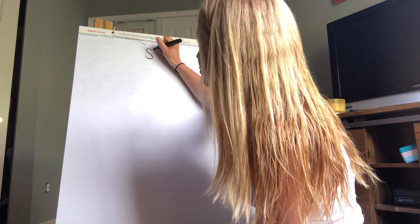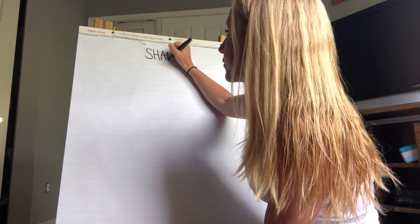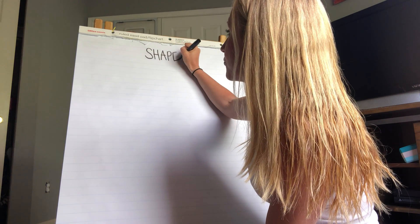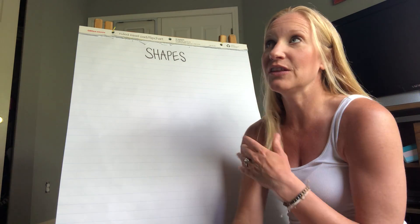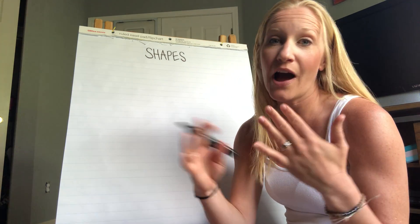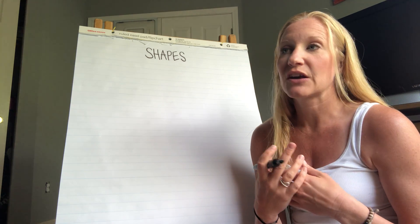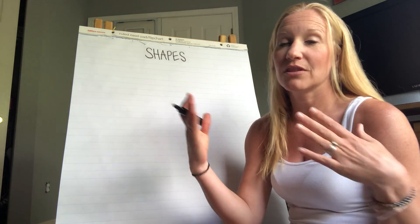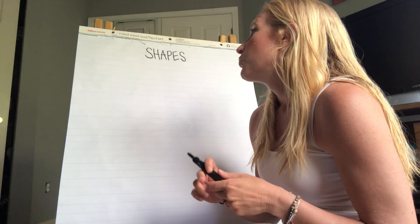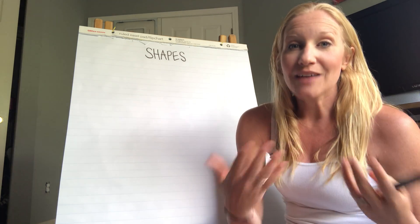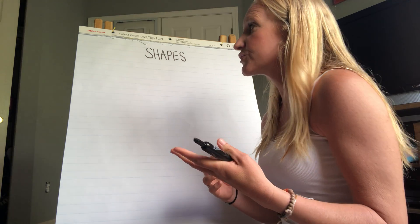Shapes are really important because if you look around wherever you are sitting right now, everything that you see in your house and in the world has been made out of shapes. It's a combination of lines and points, and what we usually talk about is sides when we talk about shapes.